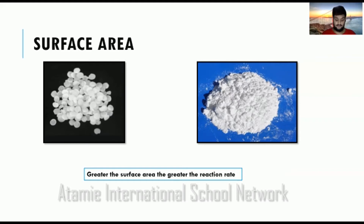When the surface area is greater, the reaction rate increases because the reactants are able to collide with the other reactants more frequently. As the surface area increases, the chances of being able to react with other reactants is much greater. So that's why in the powder form, or if you increase the surface area, you are able to perform the reaction at a greater rate.